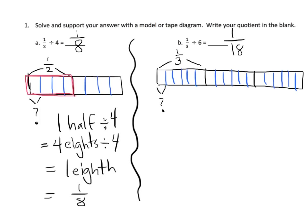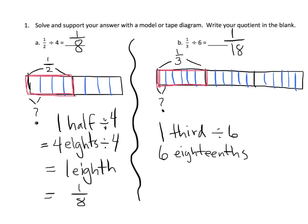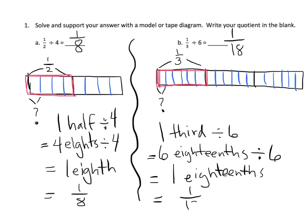One out of 18. Another way to think of this is in unit form: one-third divided by six. One-third is the same thing as six-eighteenths. And six-eighteenths divided by six is equal to one-eighteenth. So there's how you use a tape diagram to model one-third divided by six — you start with a third, chop it into six pieces, and the size of one of those six pieces is one-eighteenth.